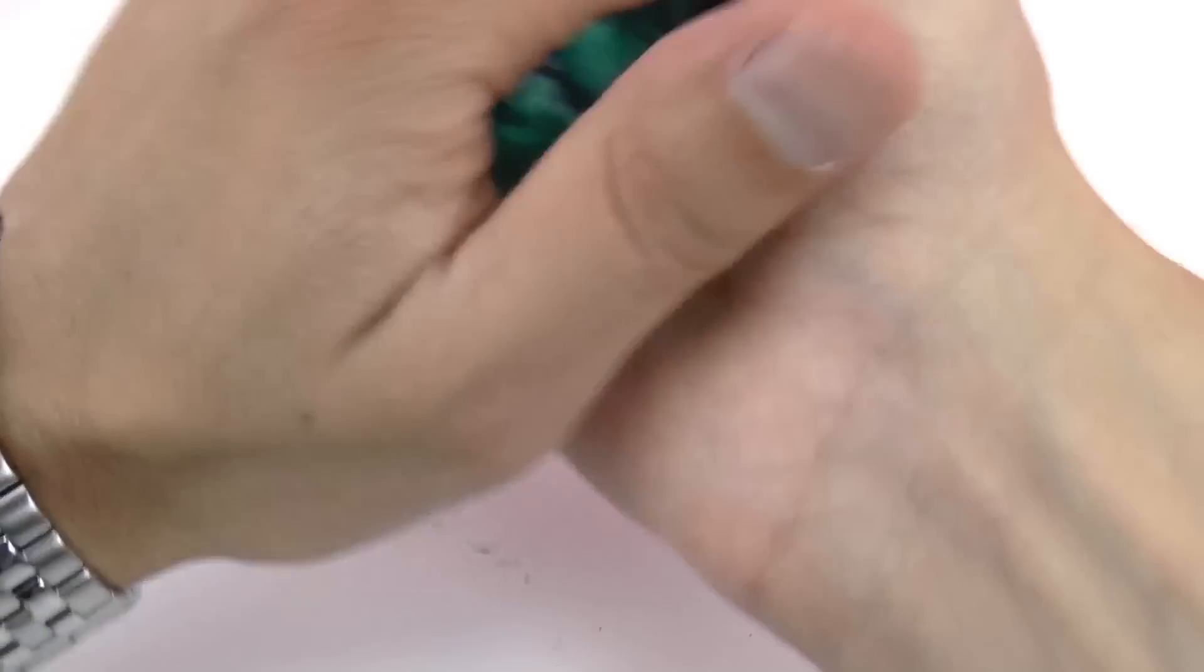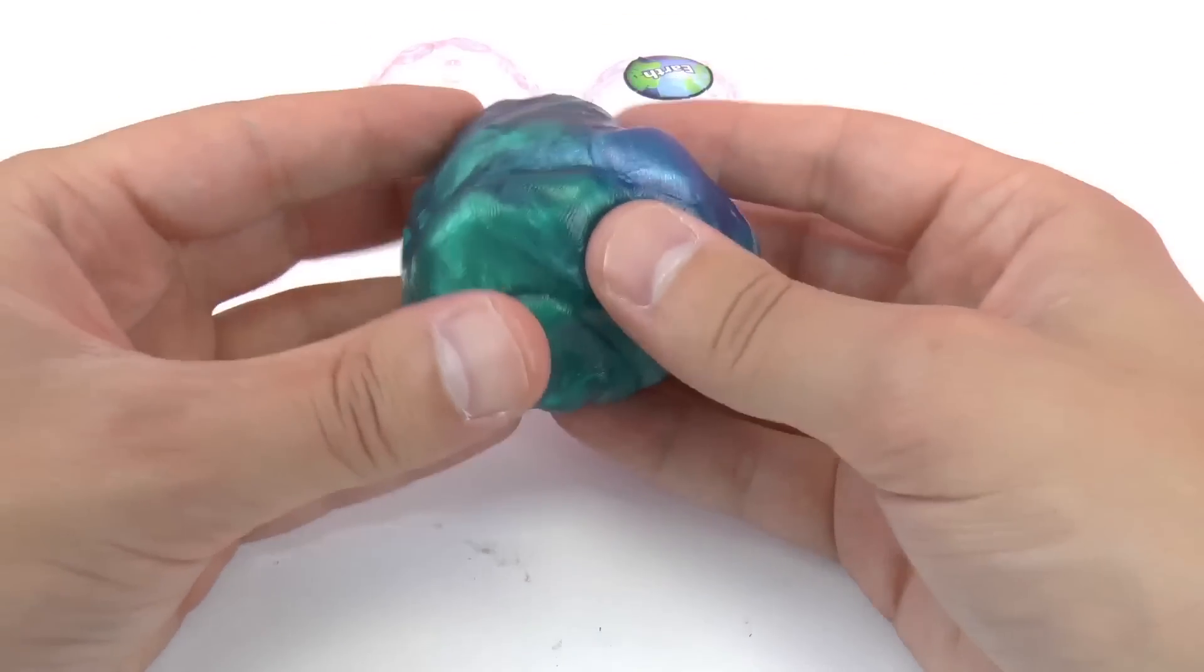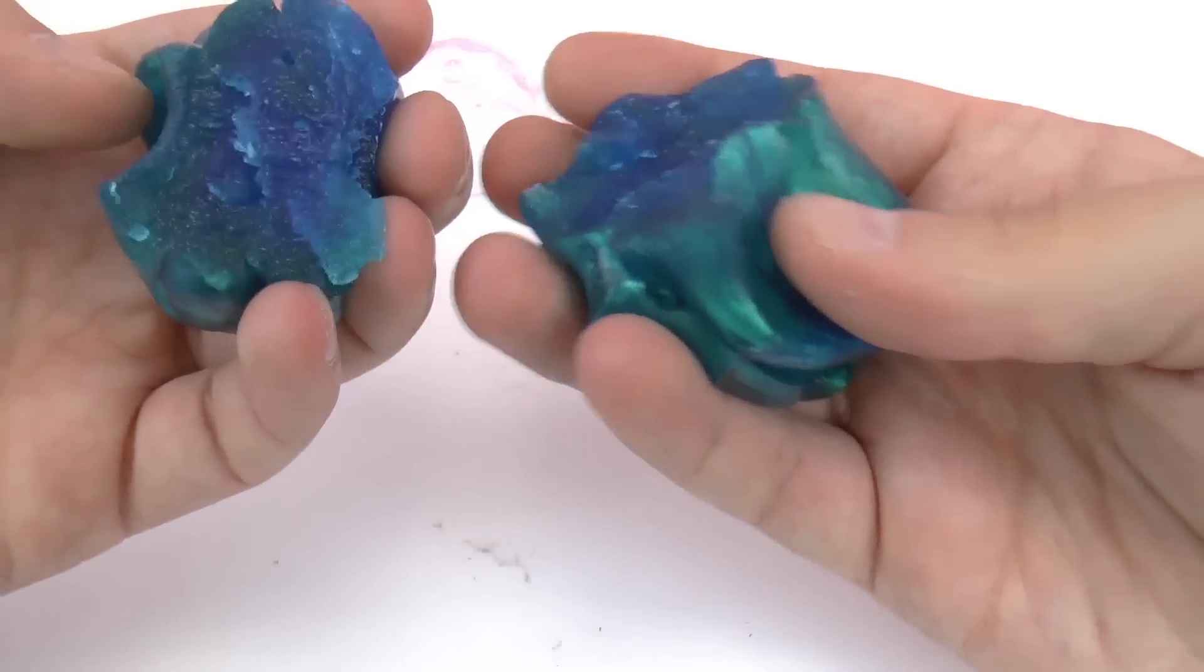But it also forms really well in the hands. You can make some cool shapes and things out of it. There it rips apart, you can see the inside. Then you can form it back together really well.